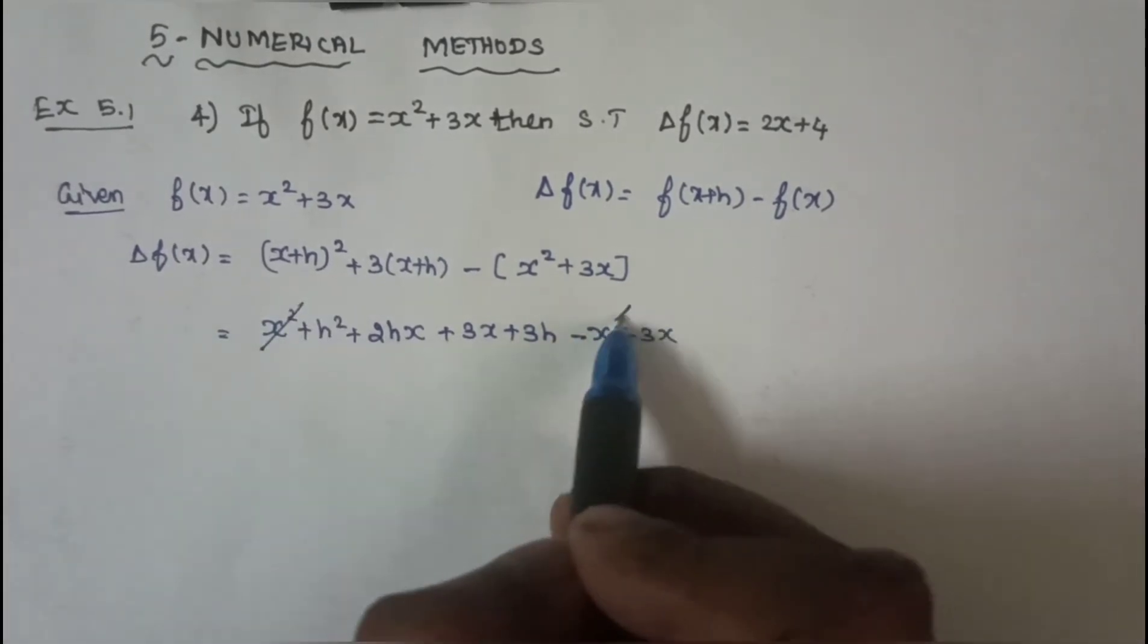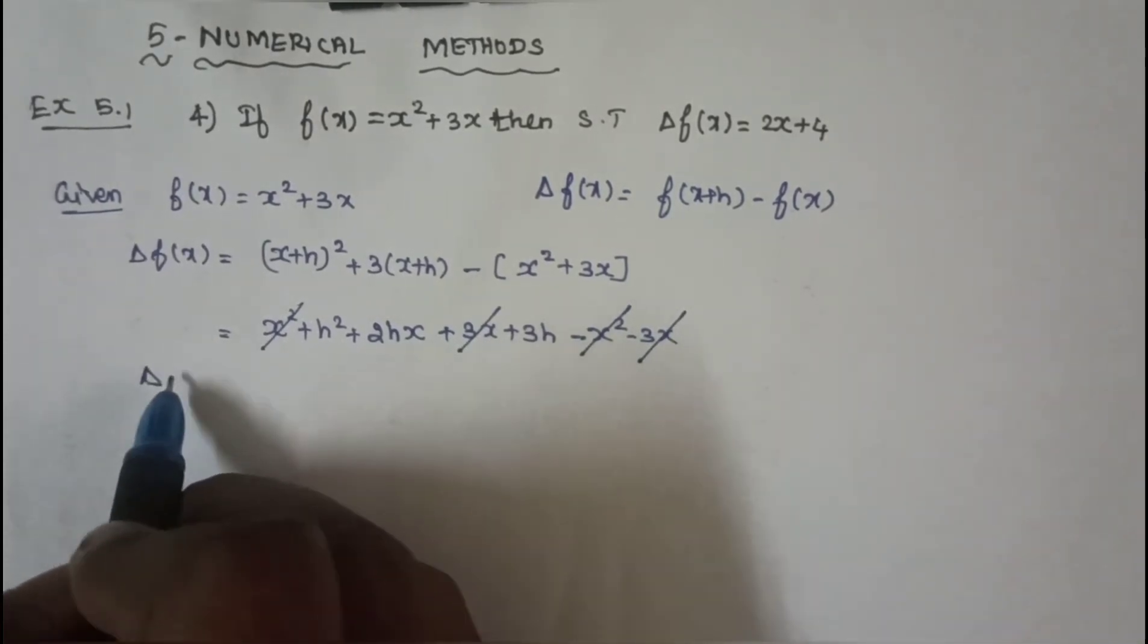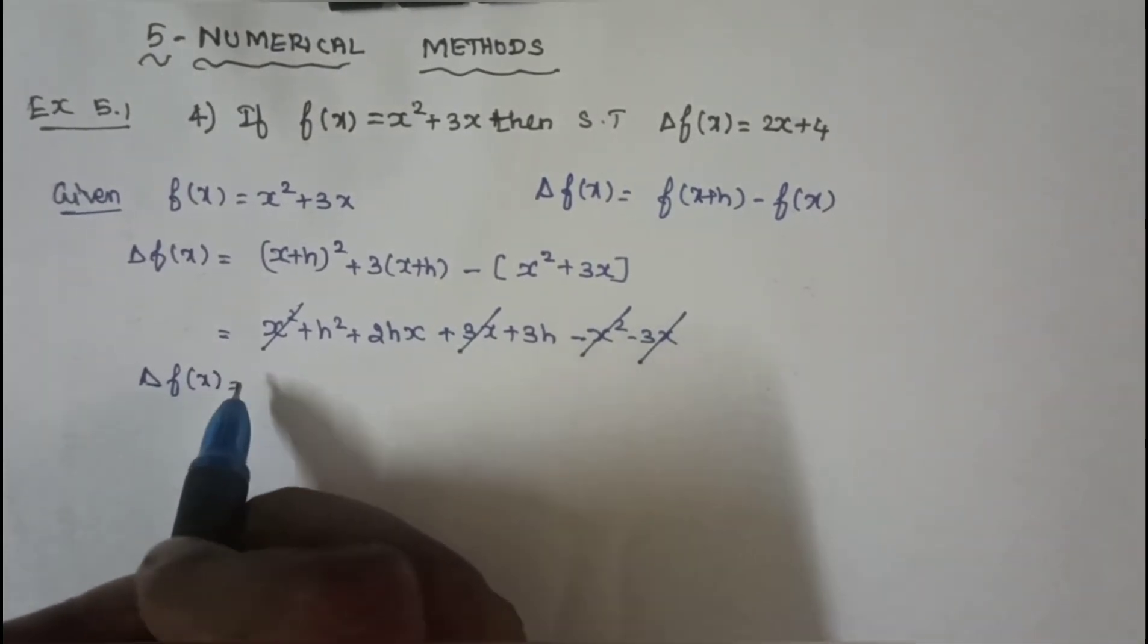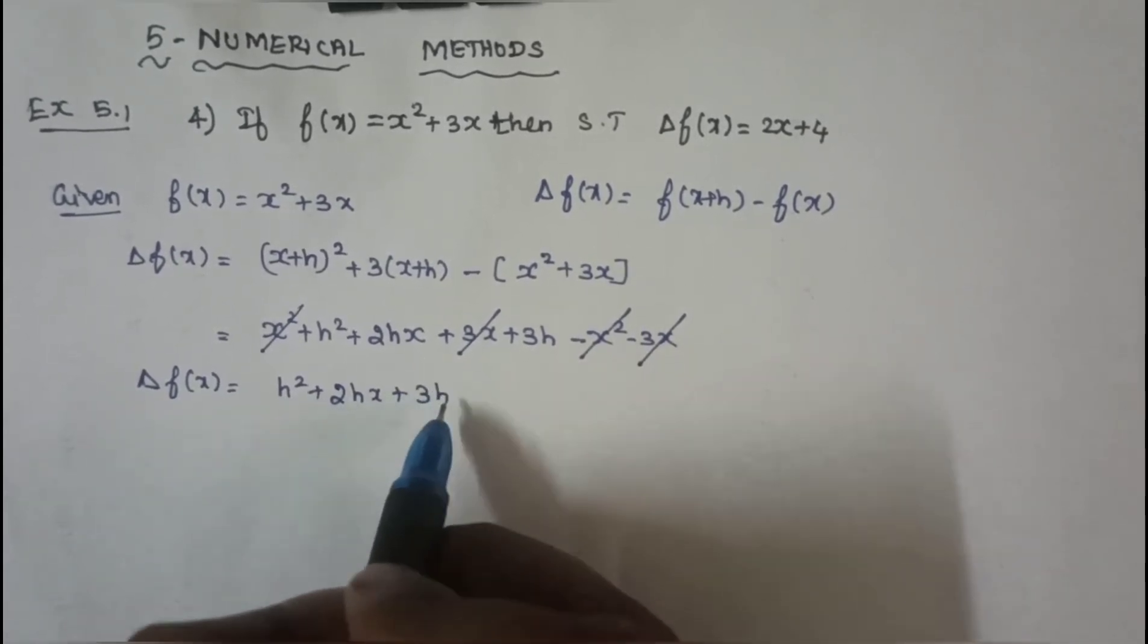X square, x square getting cancelled, 3x and minus 3x getting cancelled. So, delta f(x) equal to h square plus 2hx plus 3h.